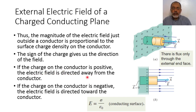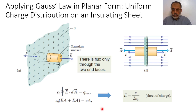The magnitude of the electric field just outside the conductor is proportional to the surface charge density — it is not inversely proportional to any distance, not inversely proportional to r or r squared as in the case of a point charge. It is a constant value. The sign of the charge gives us the direction of the electric field: E = sigma over epsilon naught.